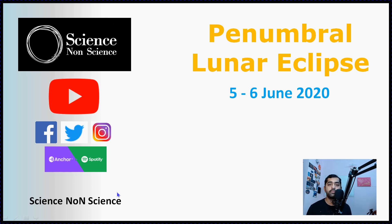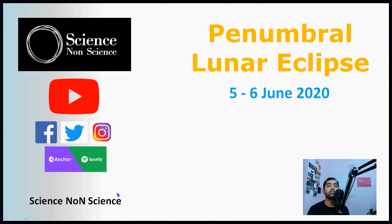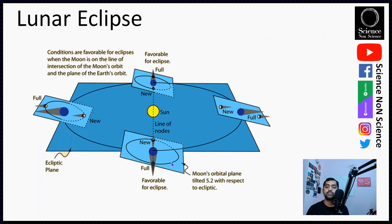Hello everyone, welcome to Science Non-Science. I am Prasanna Deshmukh and today we'll be talking about penumbral lunar eclipse. This is just a quick video to let you know how this eclipse is going to be visible, what is its significance, and how you can see it. On 5th and 6th June night, on Friday, there is going to be an eclipse during which the moon is going to pass through the penumbral shadow of Earth.